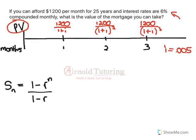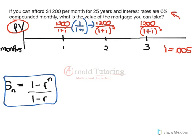Let's look at how this continues — we're trying to find the sum of a geometric series. Why is it geometric? To get from one month's present value to the next, we just multiply by 1 over (1 + i). Each additional month is just the previous month's present value multiplied by 1 over (1 + i). This takes us back to the formula for the sum of a geometric series: the sum equals the first term times (1 minus r to the n) over (1 minus r), where r is the common ratio — in this case, r equals 1 over (1 + i).